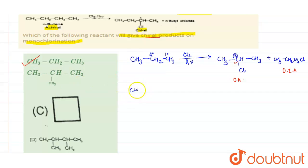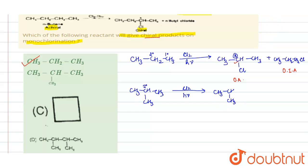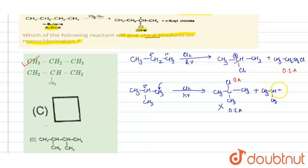The second compound is 2-methylpropane (CH3-CH(CH3)-CH3). If attack occurs on the tertiary carbon, the product formed has carbon bonded to Cl and three CH3 groups — this is not a chiral carbon, so the compound is optically inactive. Attack on the other carbon also gives no chiral carbon. Both products are optically inactive, so 2-methylpropane cannot give a chiral product on monochlorination.